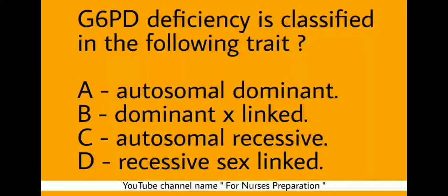Question 1. G6PD deficiency is classified in the following traits. Options are: option A, autosomal dominant; option B, dominant X-linked; option C, autosomal recessive; option D, recessive sex-linked.